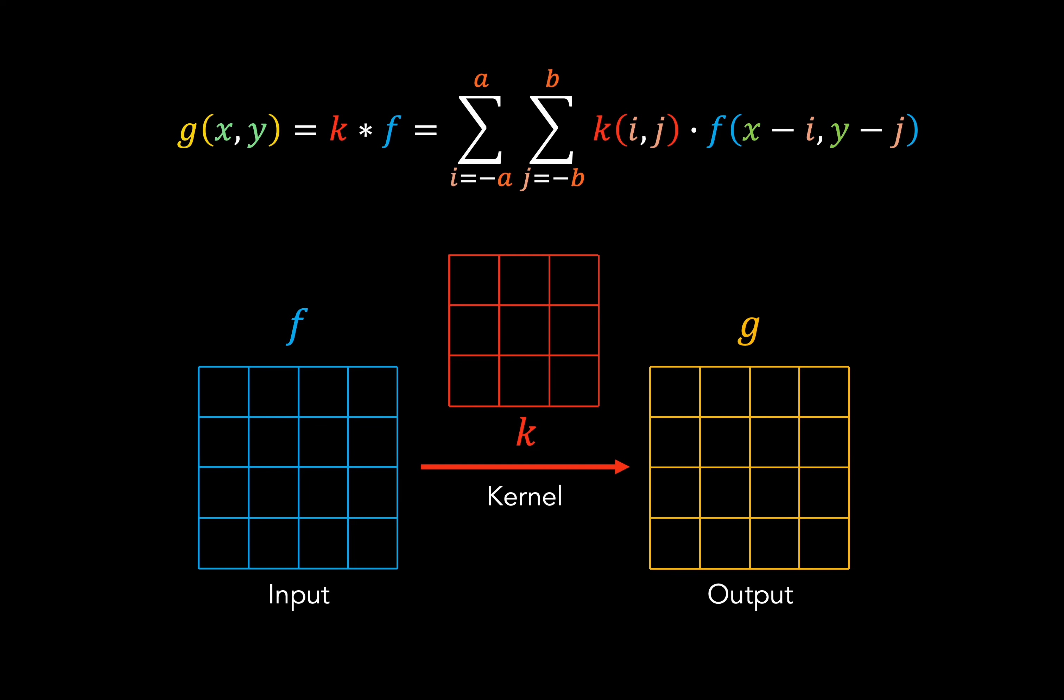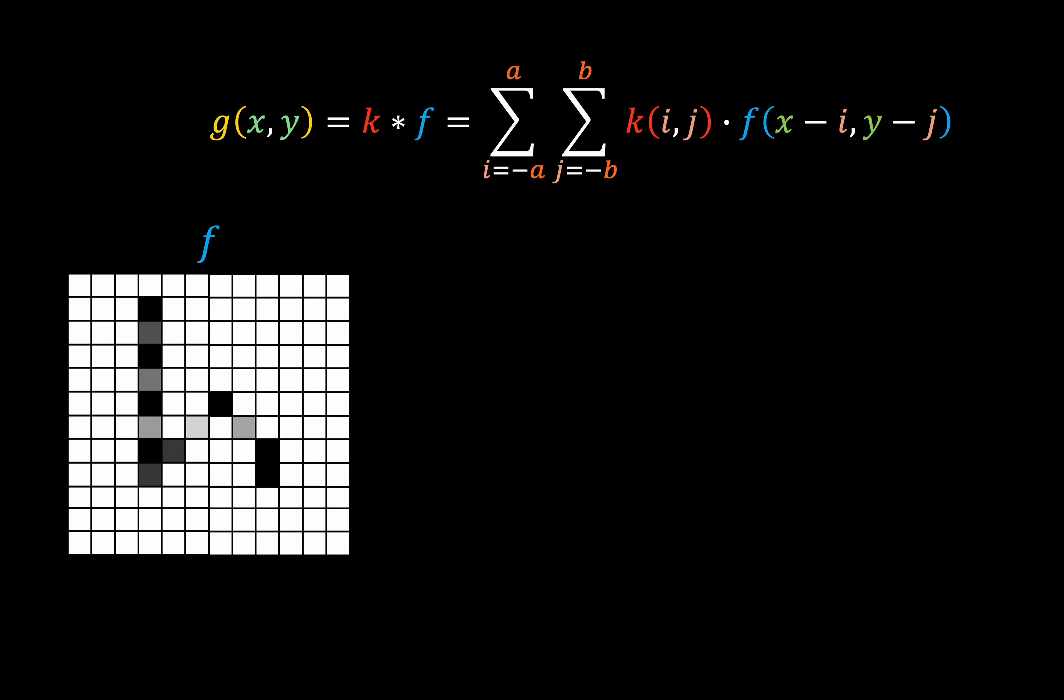So here, x and y are pixel coordinates in the image, and i and j are pixel coordinates in the kernel, and a and b are the width and height of the kernel, respectively. Now, as we can see from the convolution formula, the output at position x and y is calculated using a three-step process.